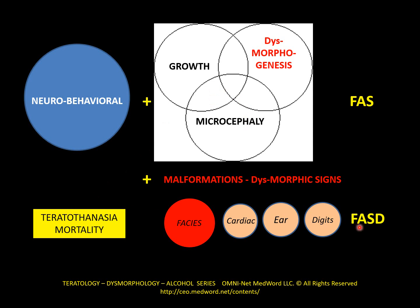We should not forget that alcohol also is a cause of death. It's a cause of early elimination of embryos. It may be manifested by reduced fertility, recurrent abortions, early fetal demise, the faces we already mentioned, and many other distortions of morphogenesis — in particular, the heart. We can see signs on the ears and digits because they are exposed and easy to note.